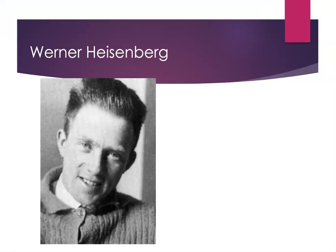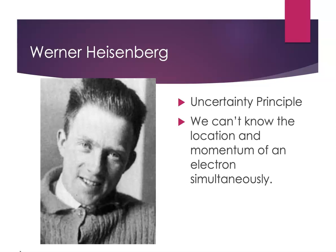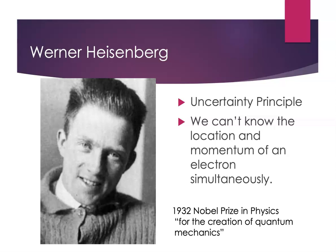Werner Heisenberg was a German physicist who had a lot of important contributions to the development of the modern model of the atom. One of these really important ideas was the Heisenberg uncertainty principle. He stated that we can't know the location and the momentum of an electron simultaneously. If we know where an electron is, we don't know how fast it's going. Momentum is mass times velocity. If we know how fast an electron is going so that we can calculate its momentum, we don't know where it is. We know one or the other — we can't know them both with any kind of precision. Heisenberg's contributions were so important that he was awarded the Nobel Prize in Physics in 1932 for basically creating quantum mechanics.